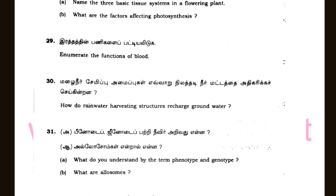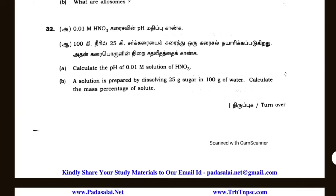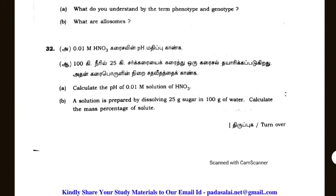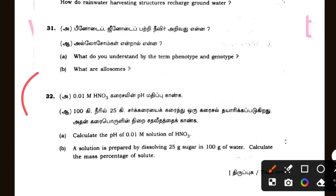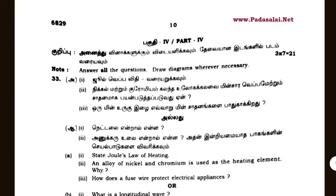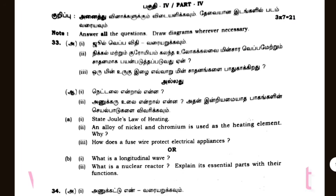Enumerate the functions of blood. How do rainwater harvesting structures recharge groundwater? What do you understand by the terms P-not type and N-not type? What are allosomes? For compulsory question 32 — 2-mark compulsory physics and 3-mark compulsory questions.